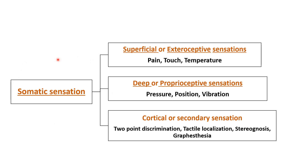Somatic sensations are further classified into primary and secondary sensations. Primary sensation is further classified into superficial and deep sensations. Superficial, also known as exteroceptive, includes pain, touch, and temperature. Deep, also known as proprioceptive, includes pressure, position, and vibration. Secondary, also known as cortical sensation, includes two-point discrimination, tactile localization, stereognosis, and graphesthesia.